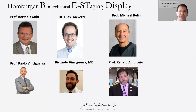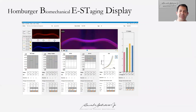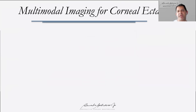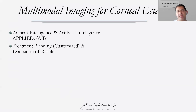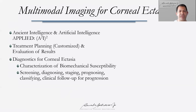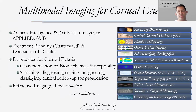A last consideration is the Hamburg staging — biomechanical staging of keratoconus — a very nice display showing a strong correlation between parameters from the Corvis and Pentacam for understanding progression. This is a very interesting approach to combine. We have to combine what we are trying to achieve: understand what we have, understand the planning, customize evaluation of results for ectasia. Characterizing susceptibility is different from diagnosing disease, staging, prognosing, classifying, and follow-up. This is a true revolution in evolution — we have the ability to help our patients in unprecedented ways.